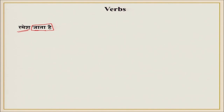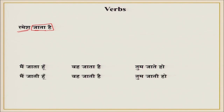Verbs also change based on person — first, second, or third. For example: 'Main jata hoon,' 'Voh jata hai,' 'Tum jate ho.' You will see these all change. Similarly for feminine: 'Main jati hoon,' 'Voh jati hai,' 'Tum jati ho.' Here you can see gender is indicated — masculine and feminine. However, in Japanese there is no gender.